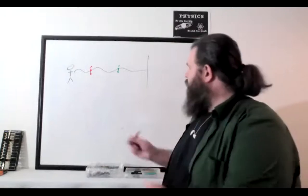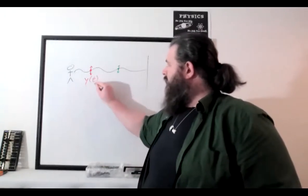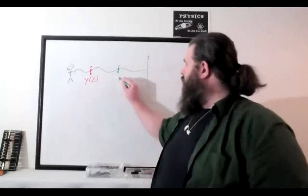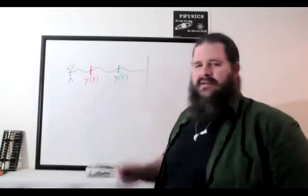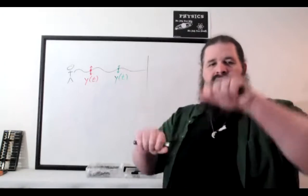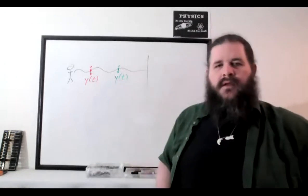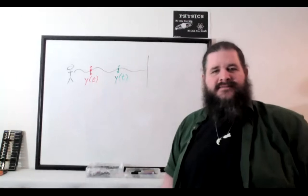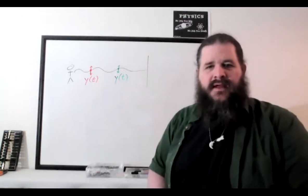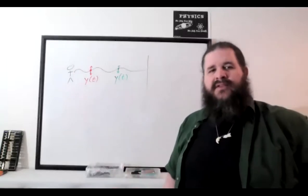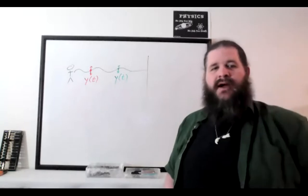So each one of those points is going to have a different equation for its own oscillation. We could write y as a function of t for this point, and keep track of its motion up and down as time passes. Those would be very similar equations, but not exactly the same, because they're oscillating out of sync. So in order to get a complete equation of the wave, we need y as a function of not just t, but also x.